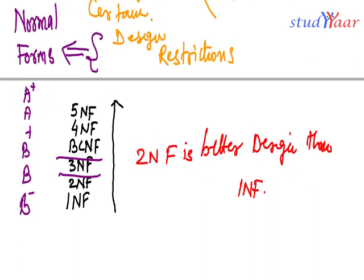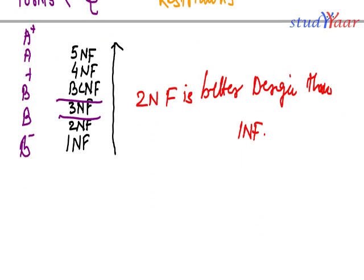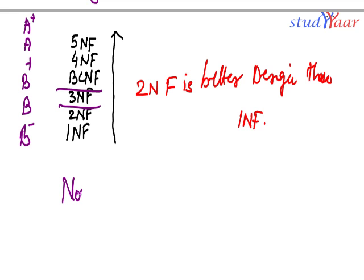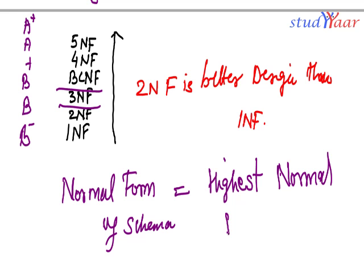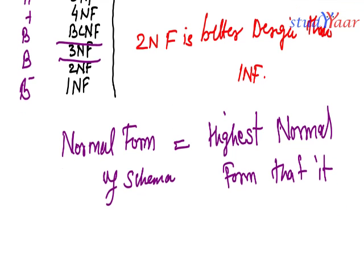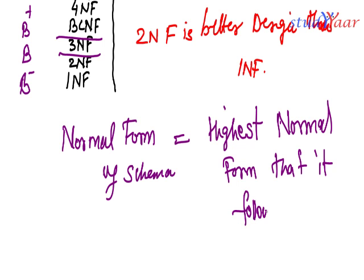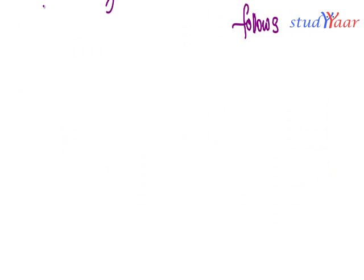So that was my concept of normalization and normal forms. The normal form of a schema is the highest normal form that it adheres to or that it follows. So we learned about what normalization is and what normal forms are.